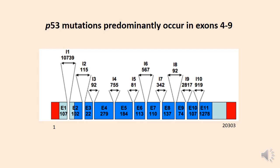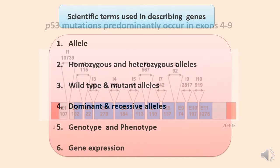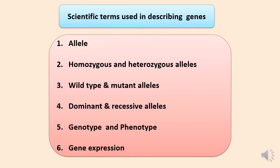Now you can understand the meaning of this statement: p53 mutations predominantly occur in exons 4 to 9. That means most of the p53 mutations occur in E4, E5, E6, E7, E8, and E9 regions. Now you know how to tell the location of a gene on a chromosome and also how to tell the location of a mutation on a gene.